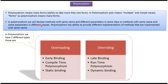In polymorphism we will declare methods with the same name and different parameters in the same class, or methods with the same name and same parameters in different classes. Polymorphism has the ability to provide different implementations of methods that are implemented with the same name.